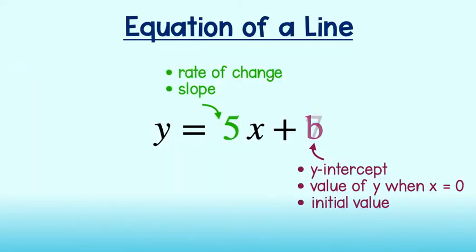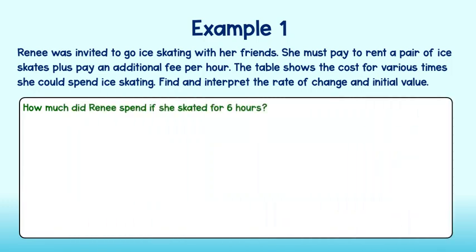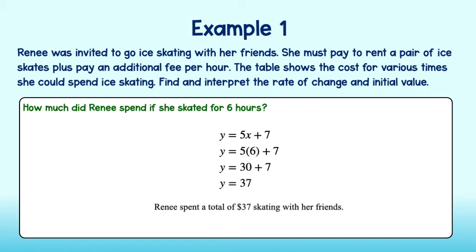So let's go ahead and put 7 in for b. Once we have the slope and the y-intercept of the equation, I like to think of this as the DNA of the word problem. We can now answer all questions that arise, and this equation will help us. For instance, how much did Renee spend if she skated for 6 hours? We bring in the equation we've built with rate of change and initial value included. In our table, hours was the independent variable x, so we can simply plug 6 in for x and solve. 5 times 6 equals 30, and 30 plus 7 equals 37. Renee spent a total of $37 skating with her friends.